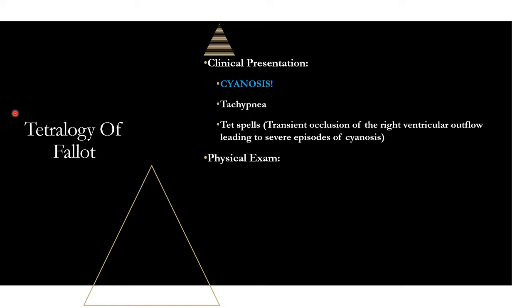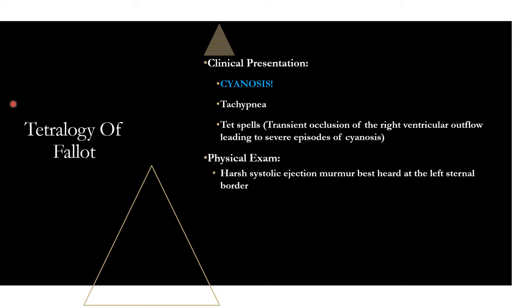That's what a TET spell is — you should know it. On physical exam, you're going to hear a harsh systolic ejection murmur best heard at the left sternal border. You might wonder why you're not hearing the VSD murmur — the reason is the murmur you're actually hearing is the blood flowing against the narrowed right ventricular outflow tract. That sound drowns out the VSD murmur. So the only murmur you hear in Tetralogy of Fallot is this harsh systolic ejection murmur from the outflow obstruction.